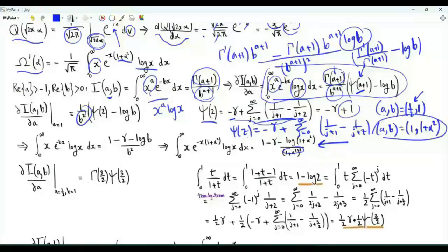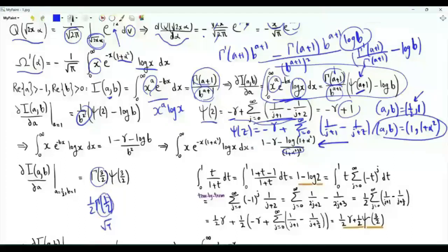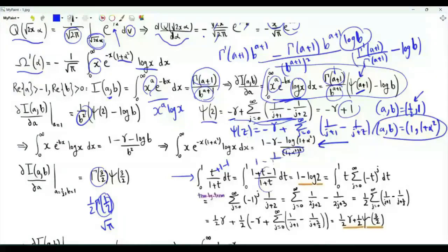When b is 1, b to the a+1 equals 1, so log b equals 0. When a equals one half, the integral equals Γ(3/2) times ψ(3/2). Γ(3/2) is one half Γ(1/2), which is the square root of π divided by 2. To obtain ψ(3/2), we consider the integral from 0 to 1 of t over 1 plus t. We can add and subtract 1 in the numerator, getting 1 minus 1 over 1+t. The integral of 1 is 1, and the integral of minus 1 over 1+t is minus log 2.